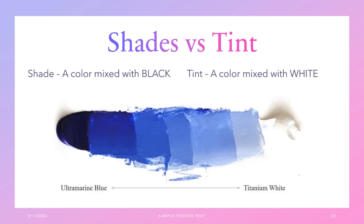A shade is a color mixed with black — either more black or less black, it doesn't matter. A tint is a color mixed with white — either more white or less white, again it doesn't matter.